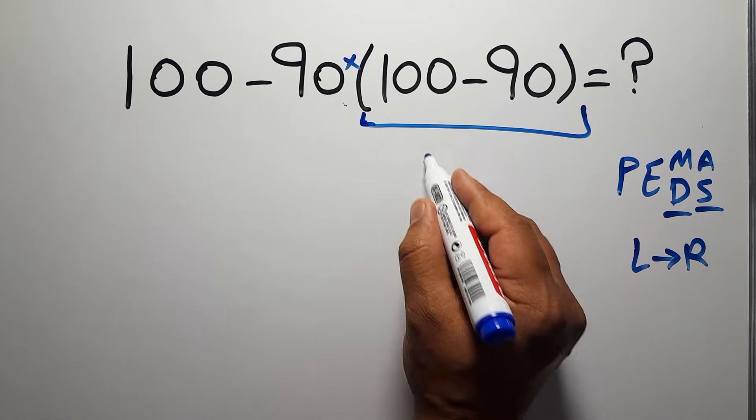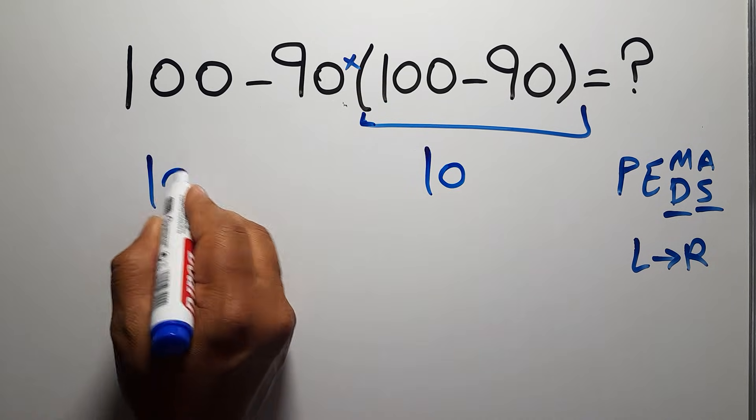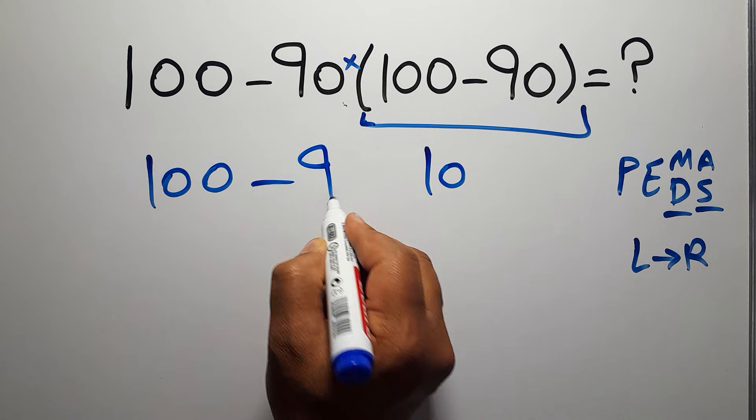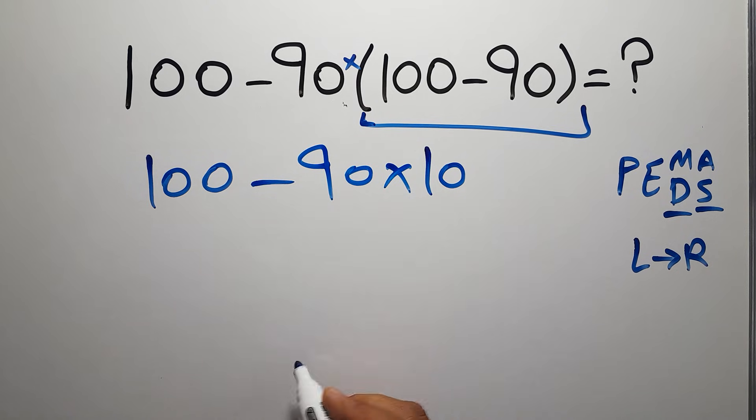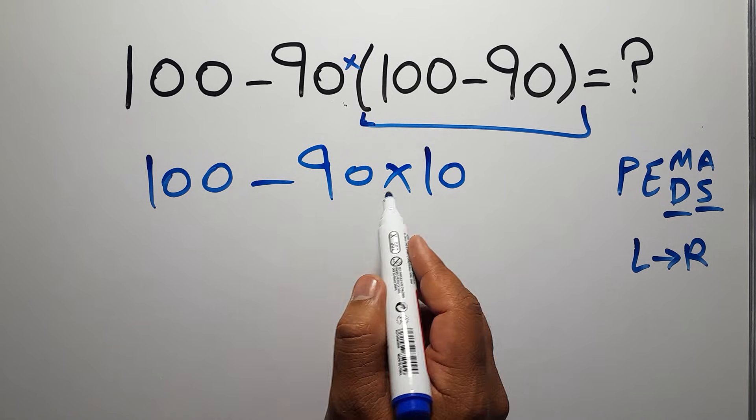So 100 minus 90 times 10. Now we have to do this multiplication because in PEMDAS multiplication comes before subtraction.